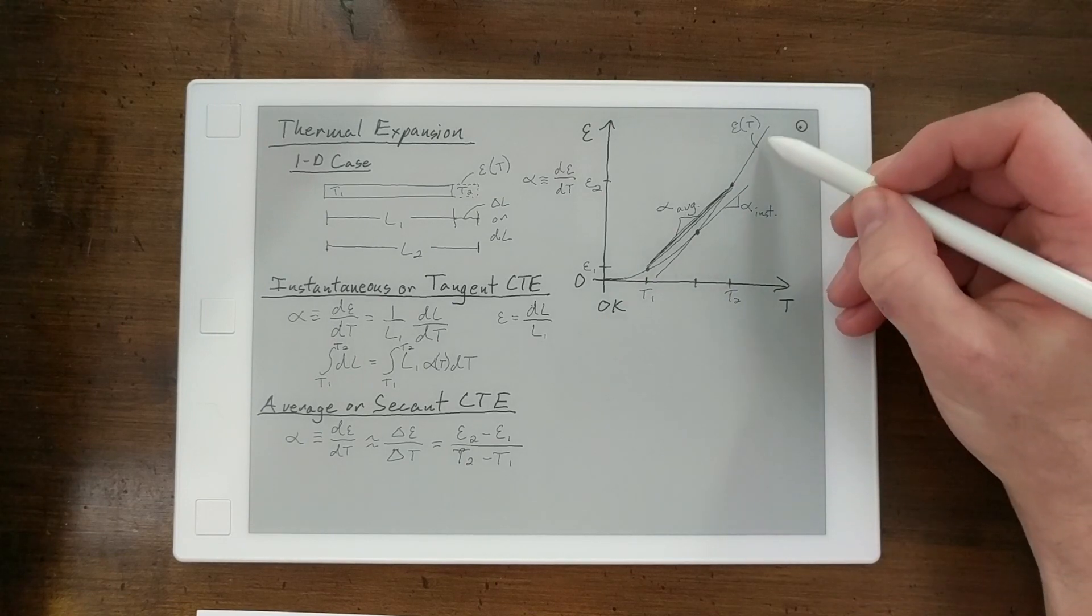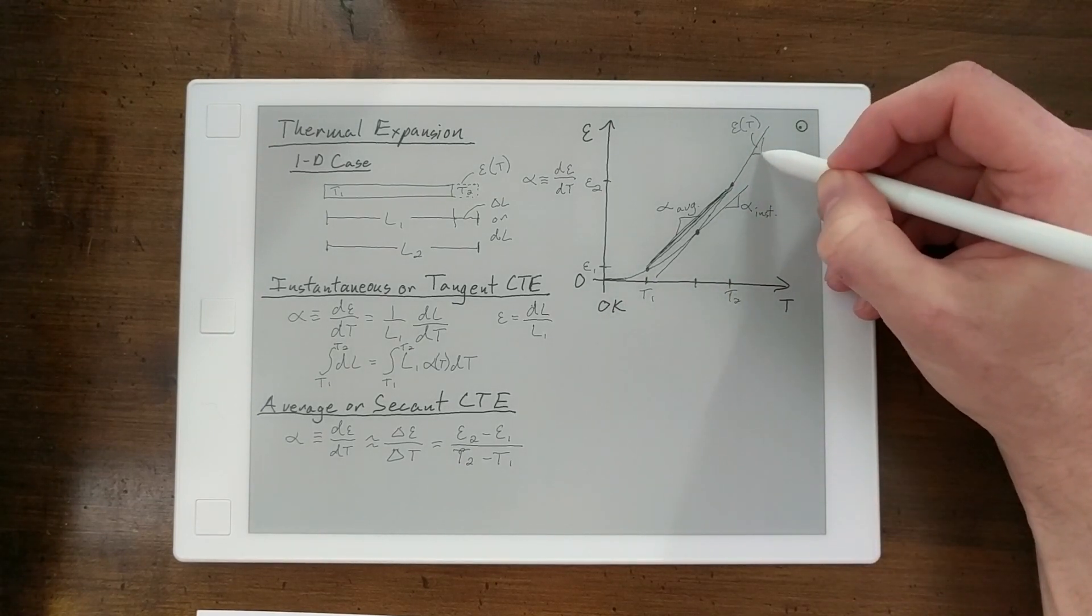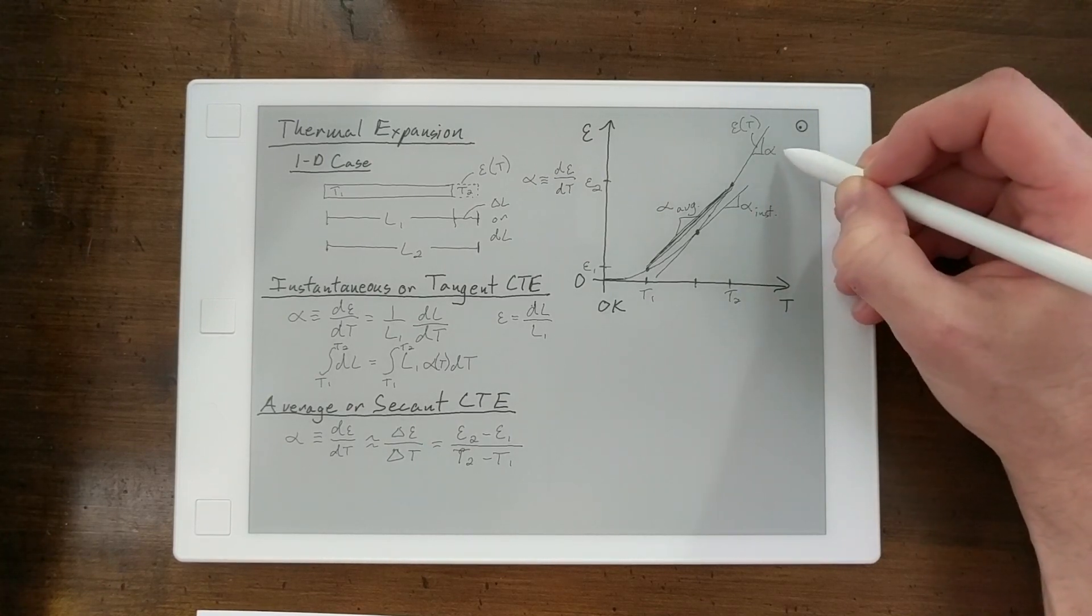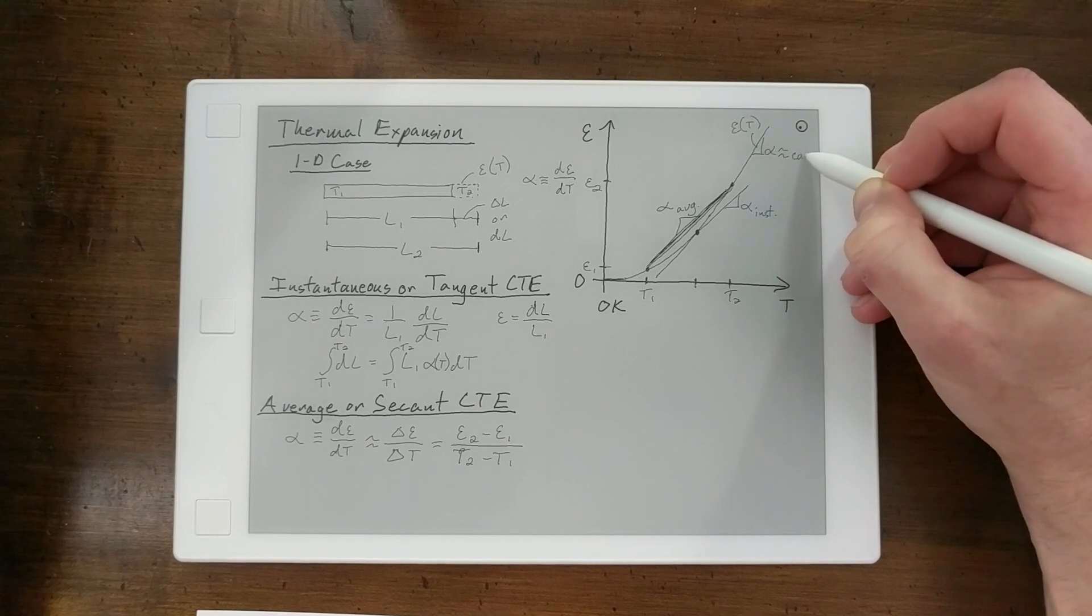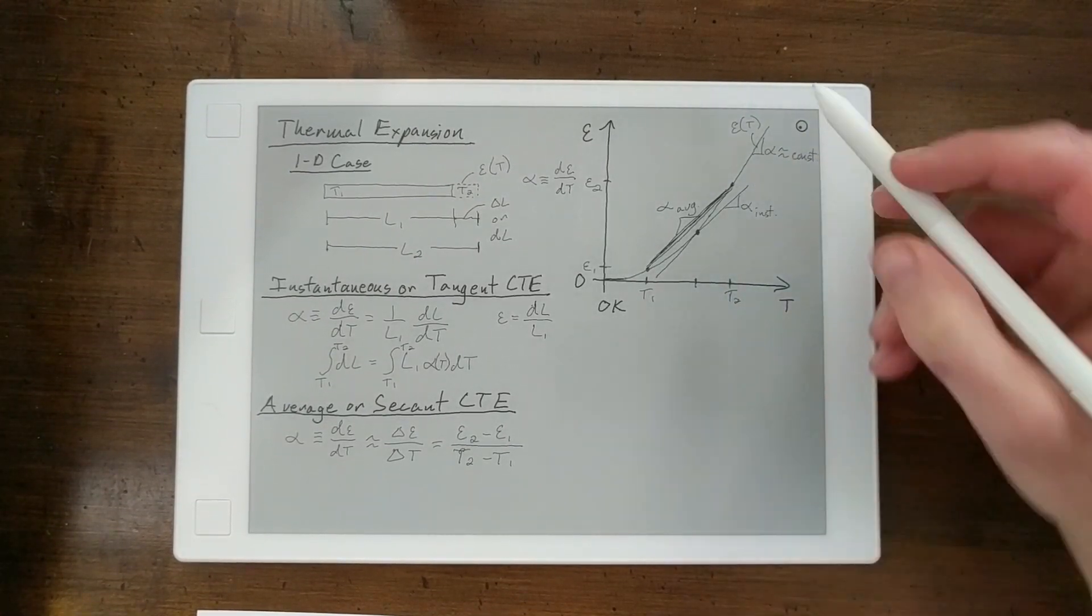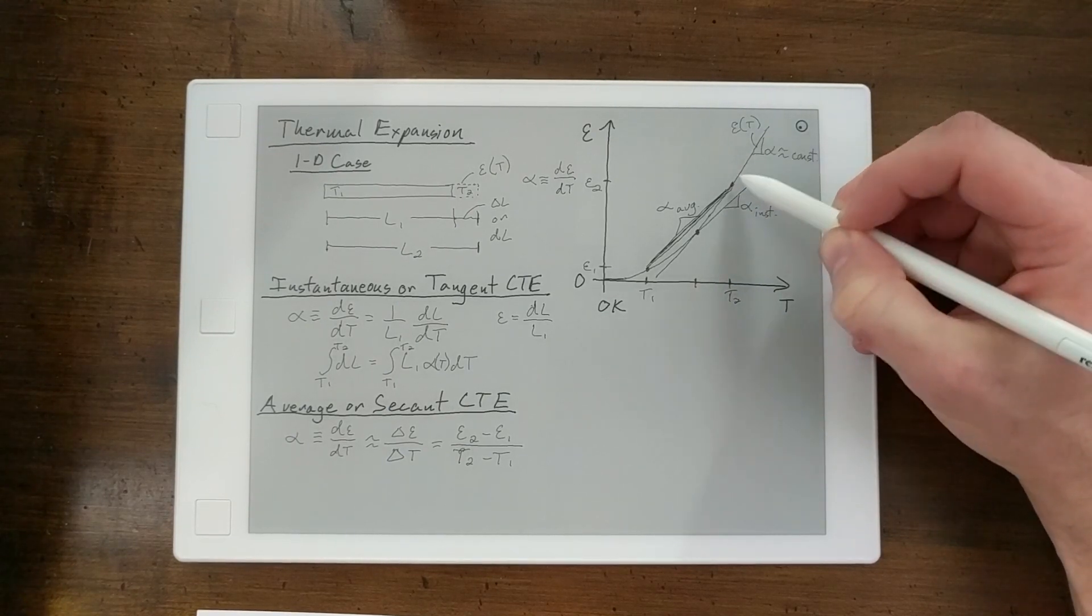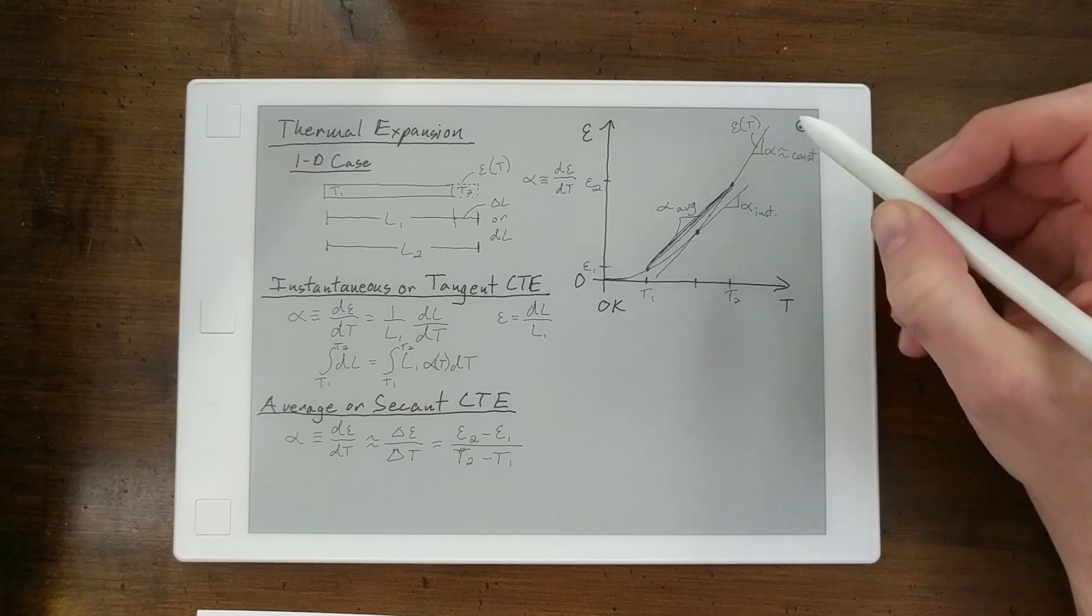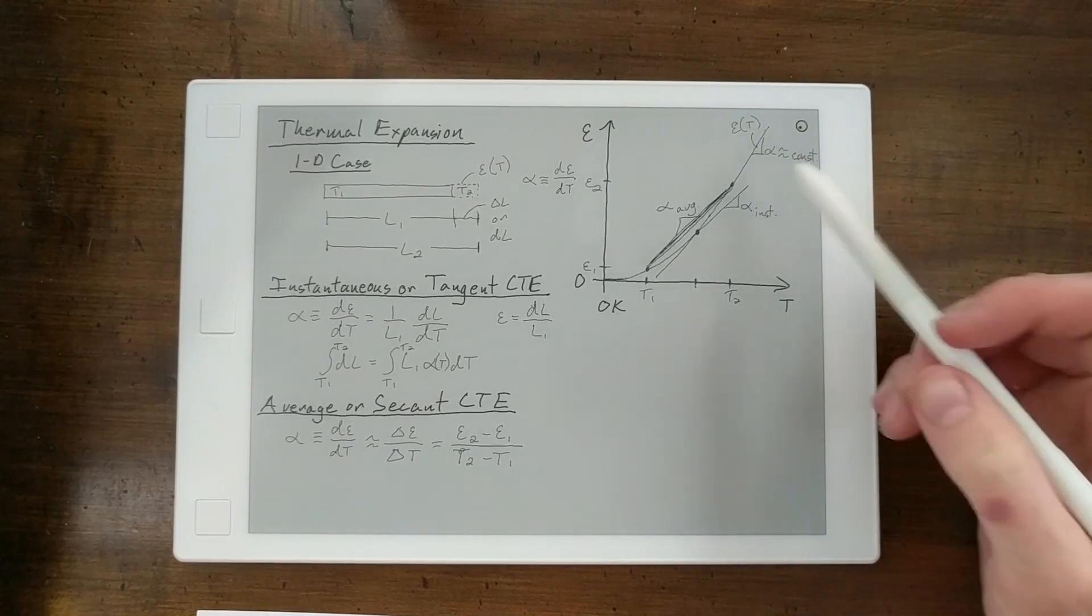Now, in a temperature range where the thermal expansion coefficient is somewhat of a constant, or the slope is somewhat constant, the average CTE is a really good measure. So, if you, for example, drew, if T1 was here and T2 is here, that's a fairly straight line. Your average and your secant and your instantaneous CTE are all about the same.